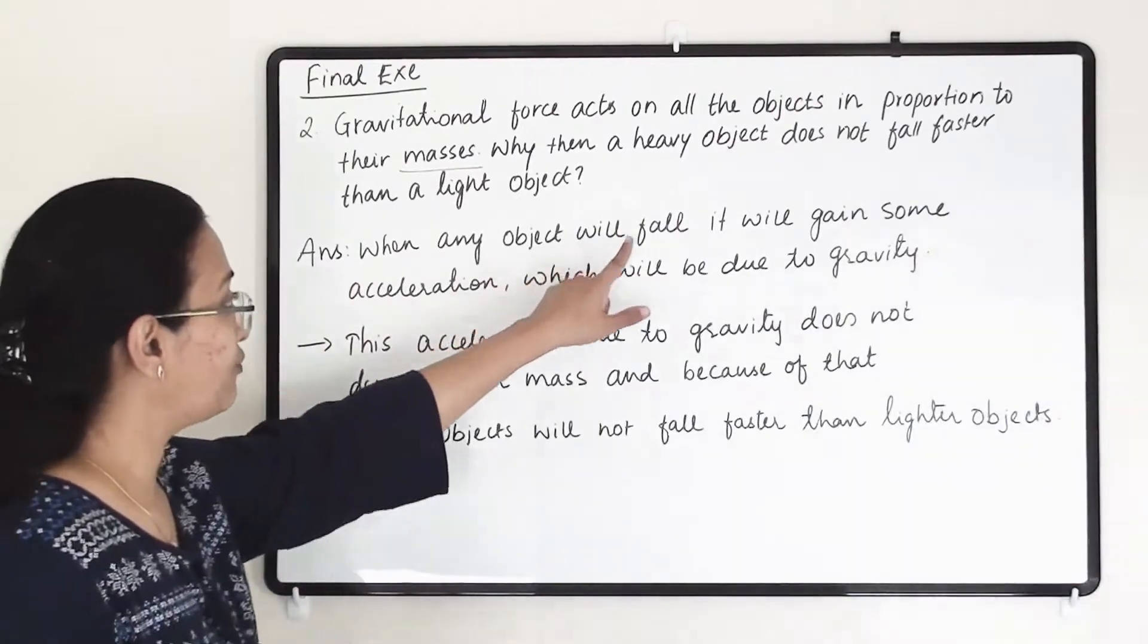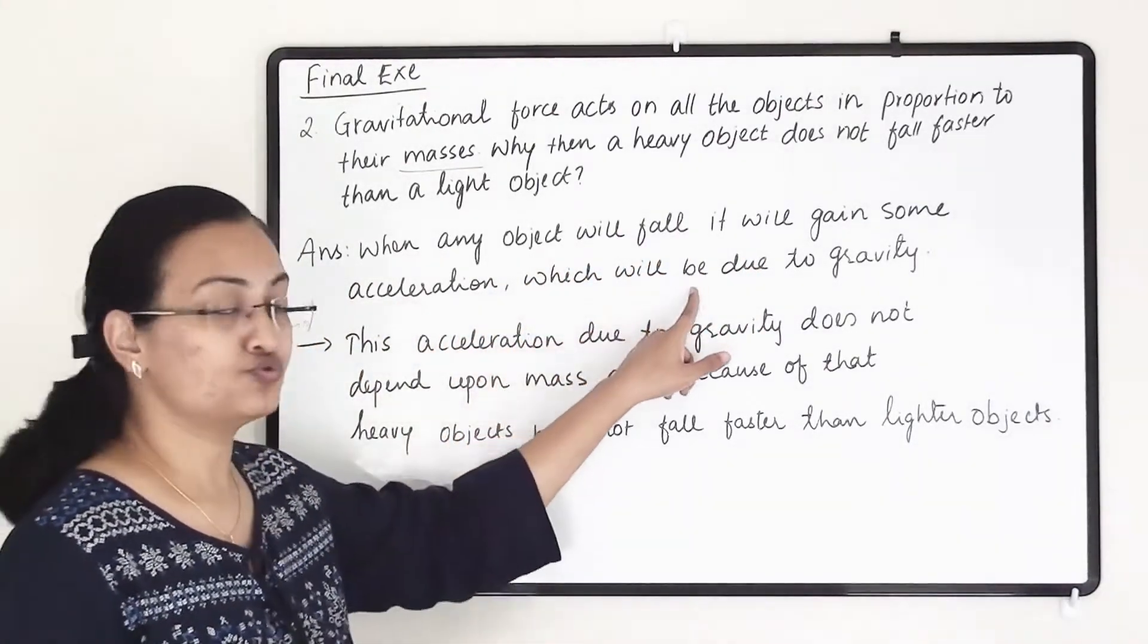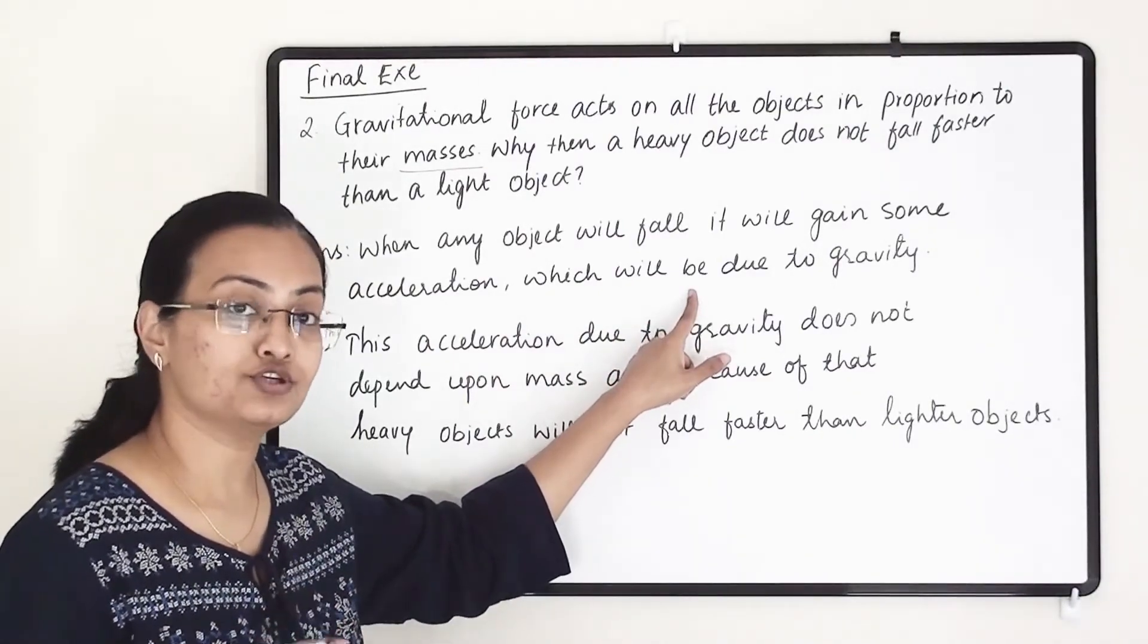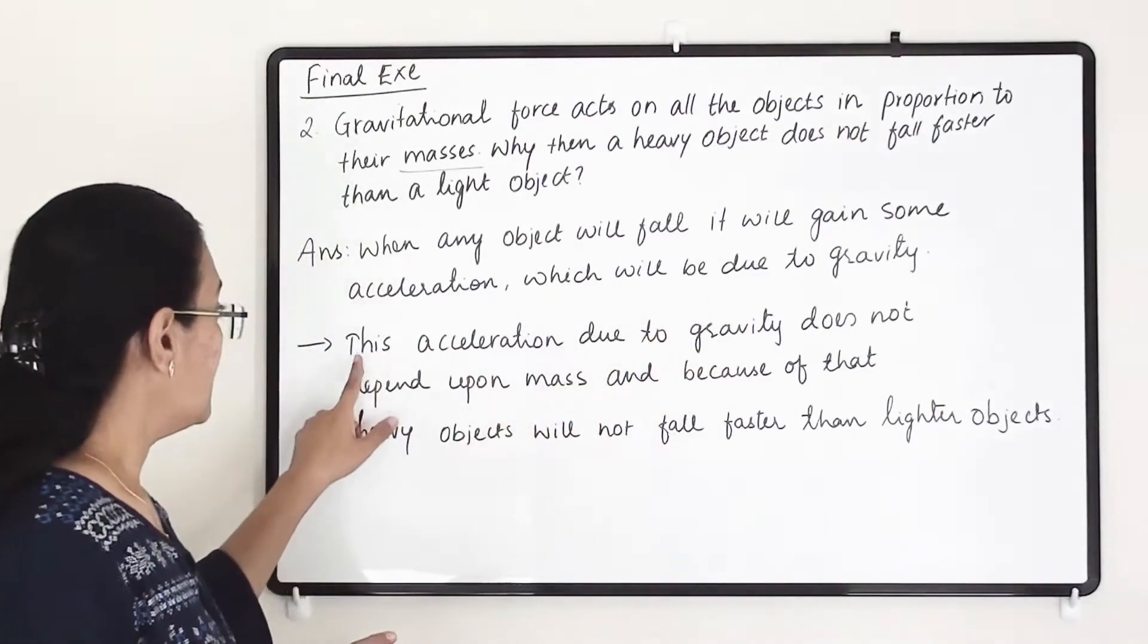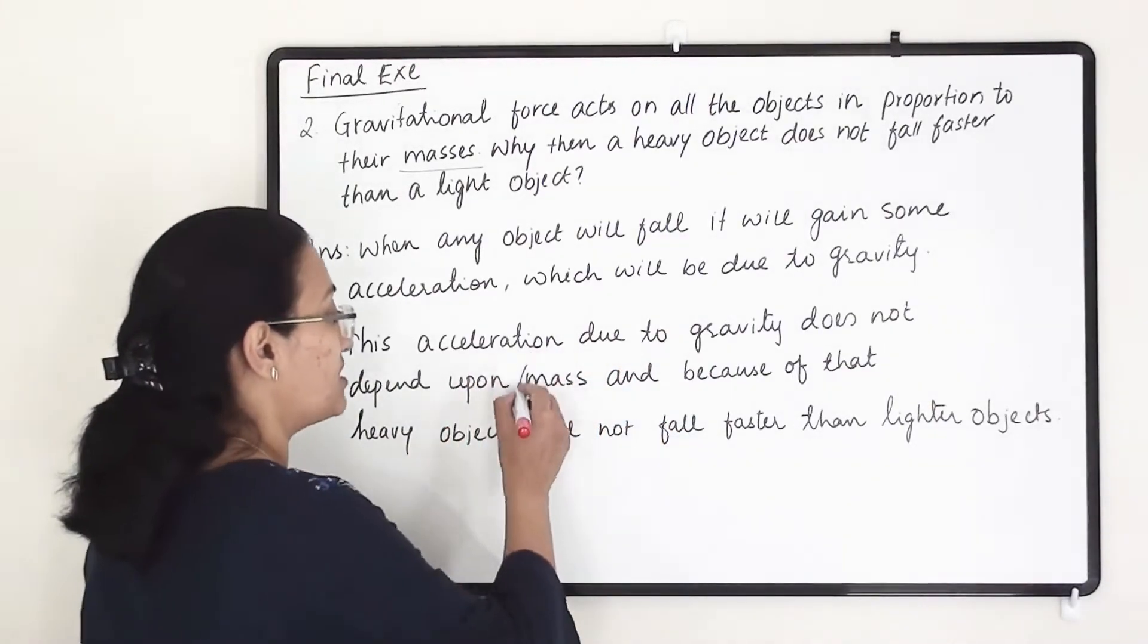When any object will fall, it will gain some acceleration which will be due to gravity. And we know that this acceleration is known as acceleration due to gravity. This acceleration due to gravity does not depend upon mass.